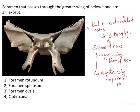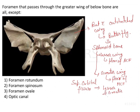There is something known as the superior orbital fissure. The superior orbital fissure is generally seen between the lesser and greater wing of the sphenoid.